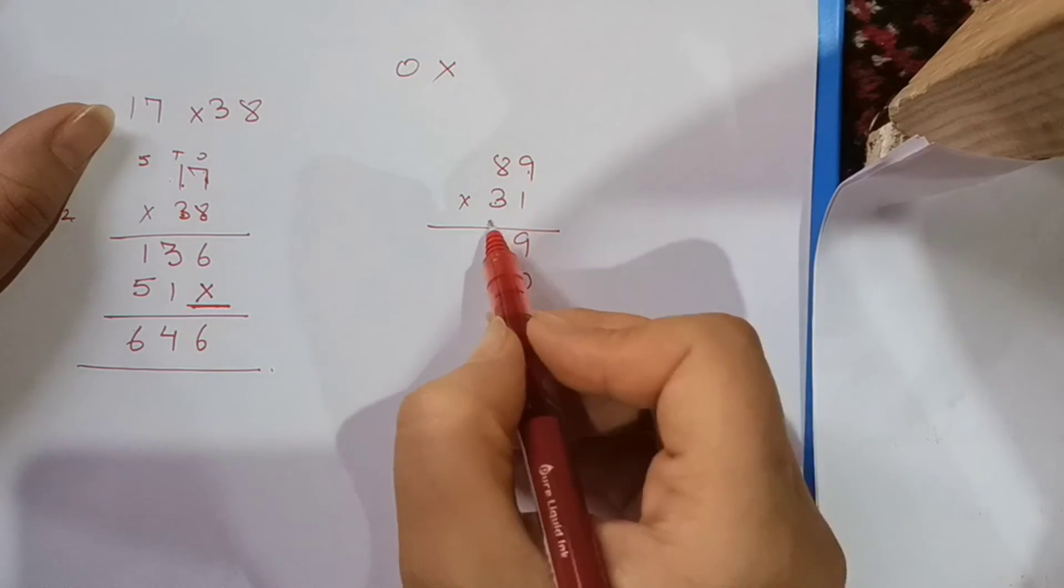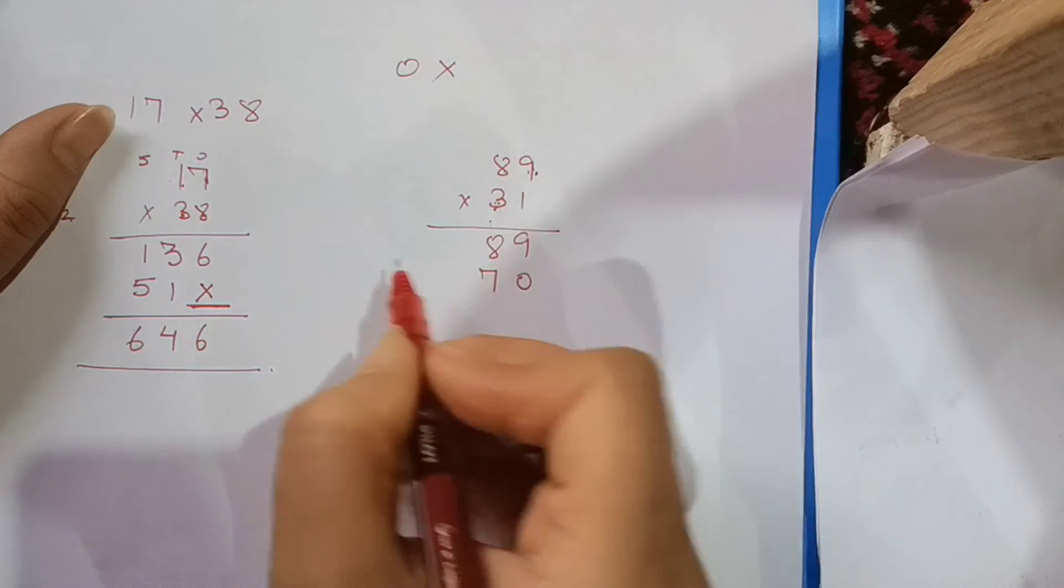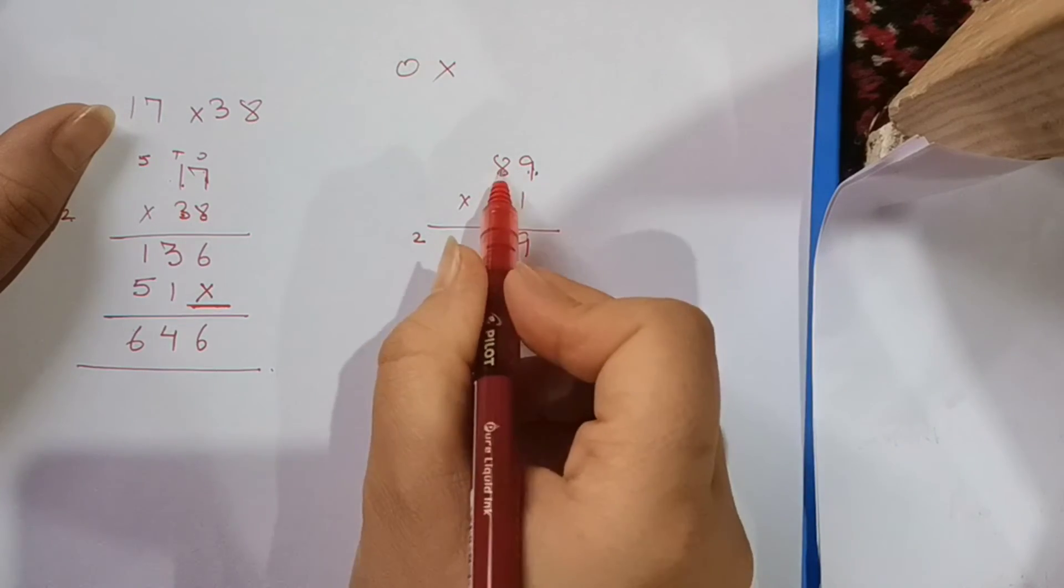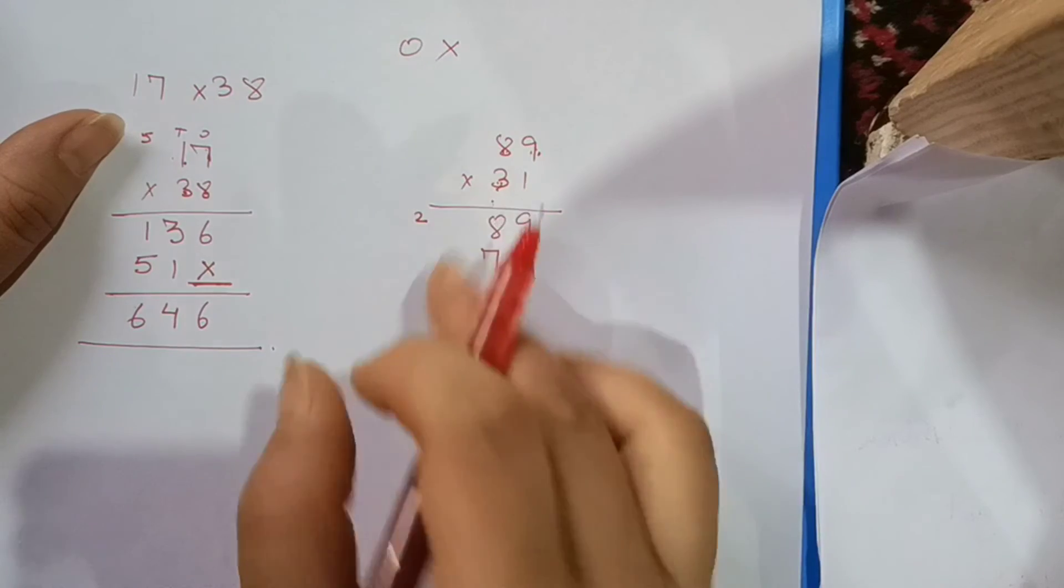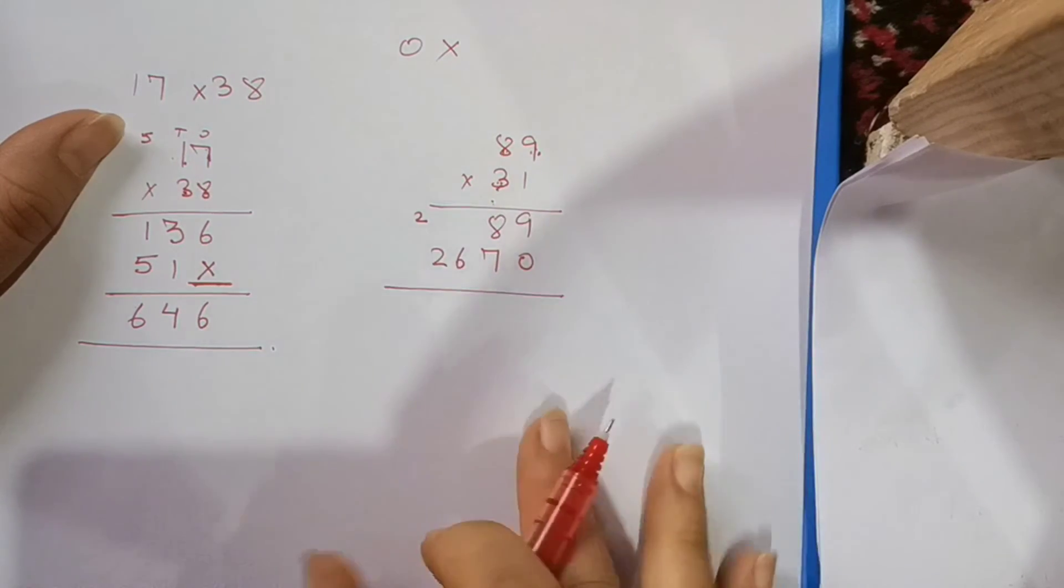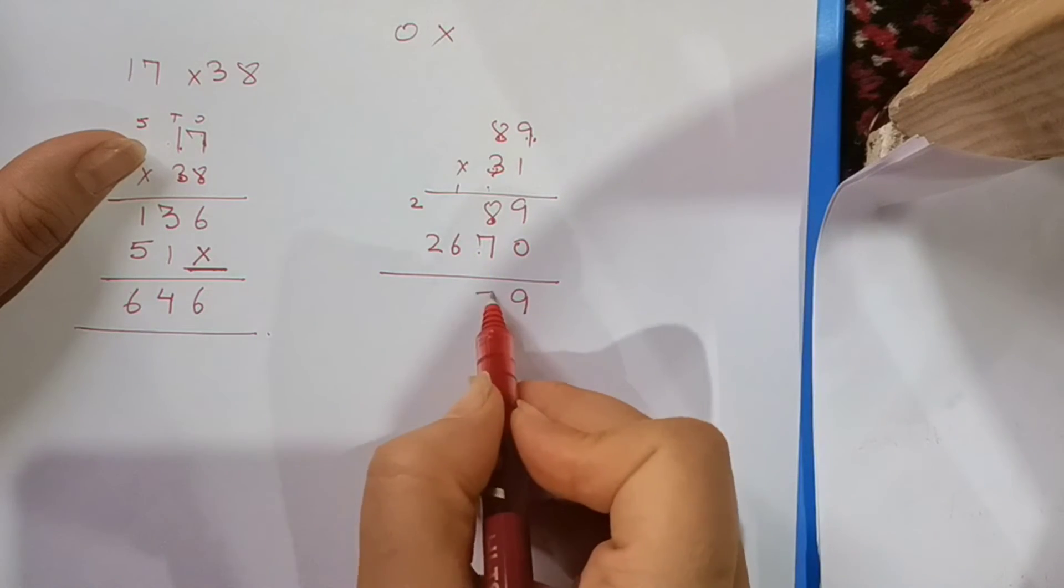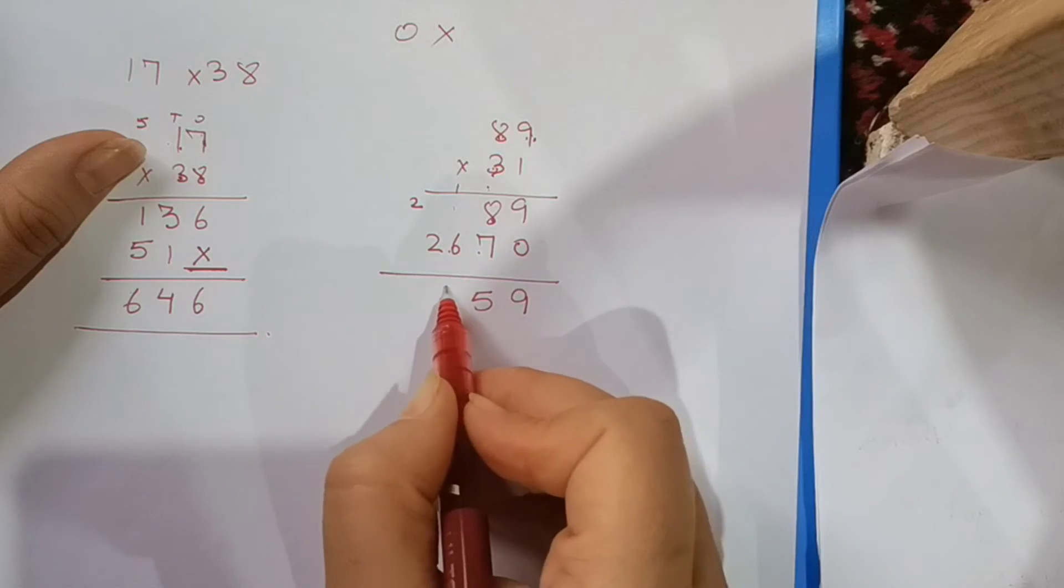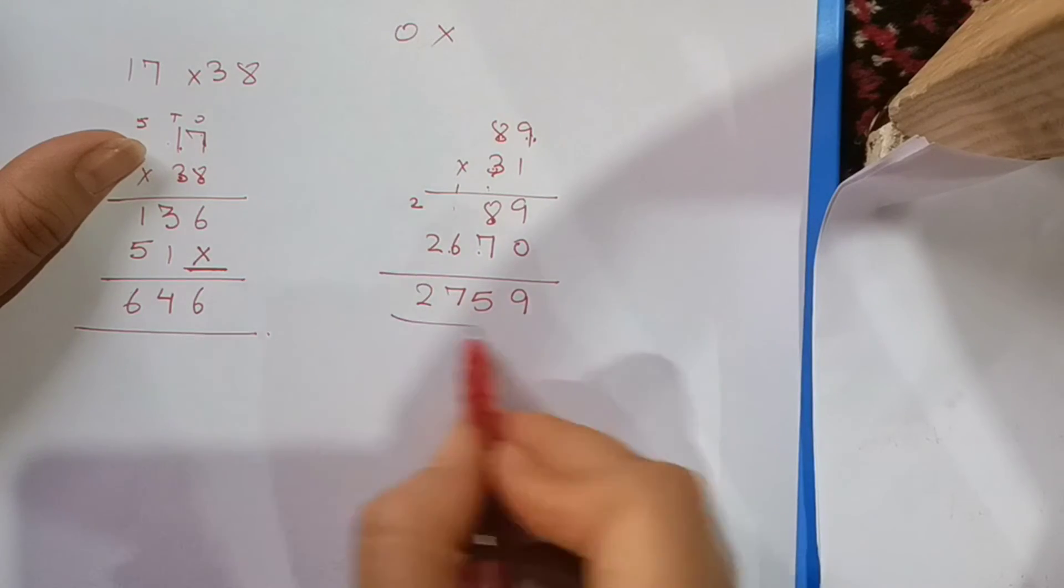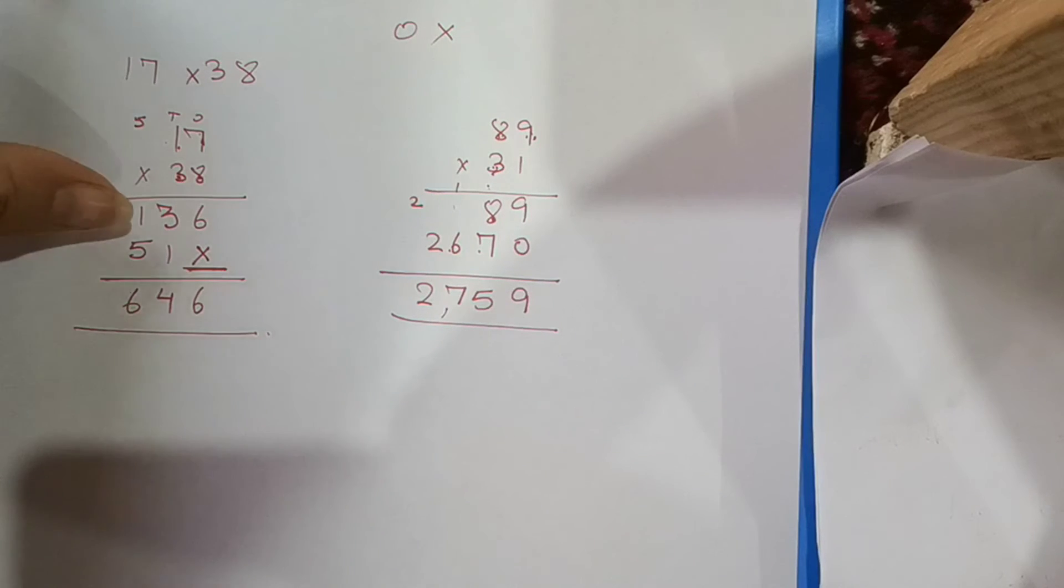So we will do 3 times 9 are 27. Keep 2 carry. 3 times 8 are 24, 24 plus 2 is 26. 9, 7 plus 8 is 15, 1 carry. 6 plus 1 is 7, 2. So 2759 is your answer.